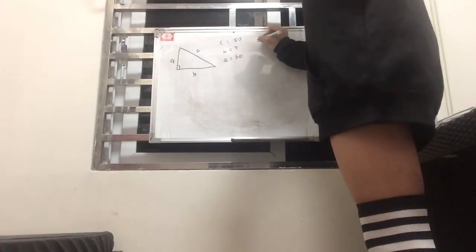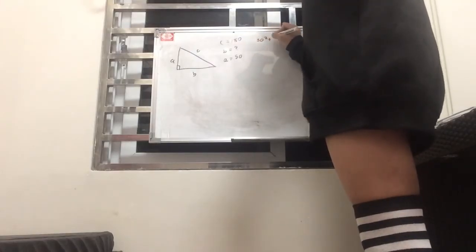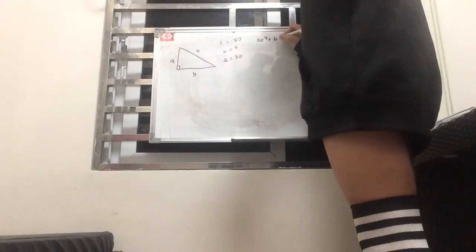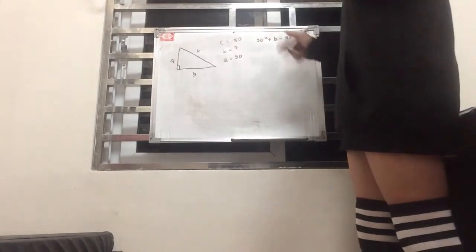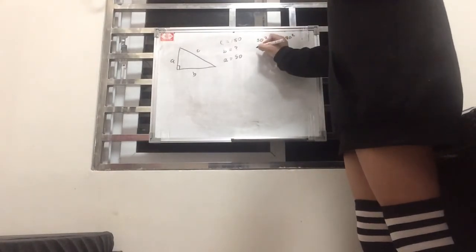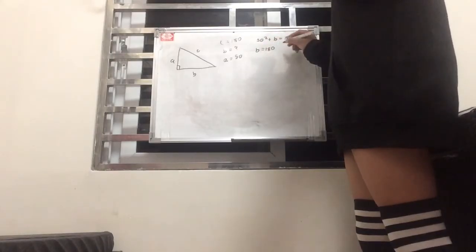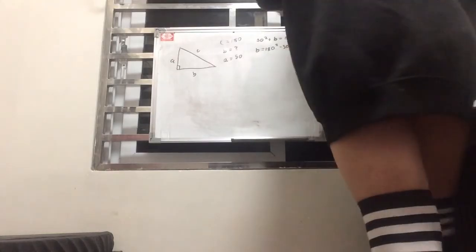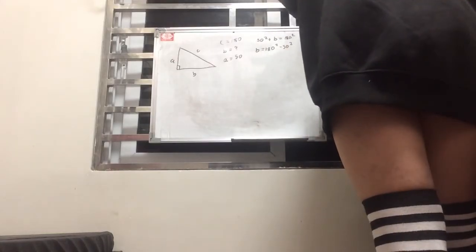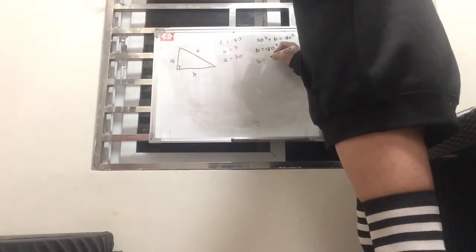So then how do we find out? Basically we just plug it into the equation: 50² + b² = 180². Then we just do the necessary algebra. We transfer to the other side, so b² = 180² - 50².